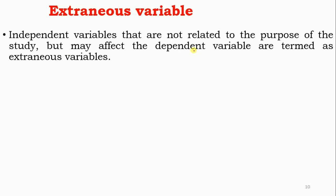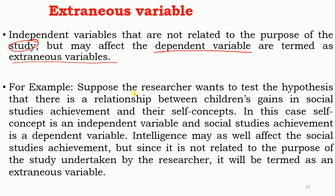Extraneous variables are independent variables that are not related to the purpose of the study but may affect the dependent variable. For example, suppose a researcher wants to test the hypothesis that there is a relationship between children's gain in social studies achievement and their self-concept. In this case, self-concept is the independent variable and social studies achievement is the dependent variable. Intelligence may also affect social studies achievement, but since it is not related to the purpose of the study, it is termed an extraneous variable.